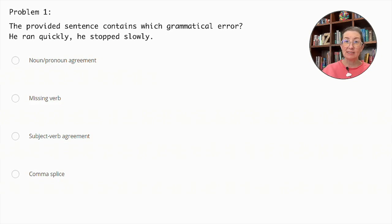The sentence does not contain errors related to noun pronoun agreement, a missing verb, or subject verb agreement. Noun pronoun agreement would be incorrect if the pronouns did not match in number or gender, but here 'he' correctly matches the subject, so we can cross that out.